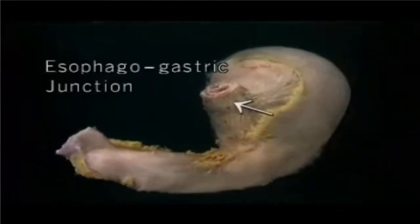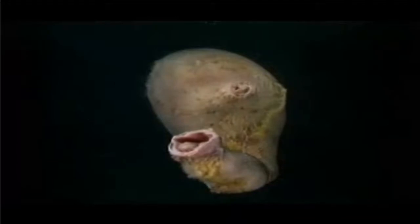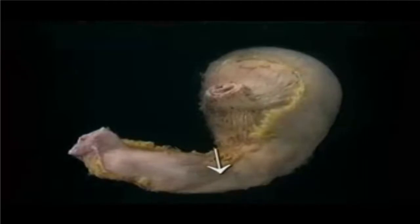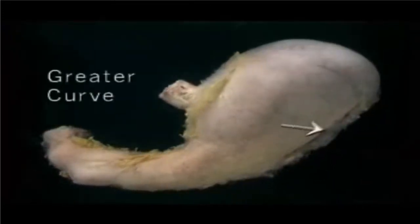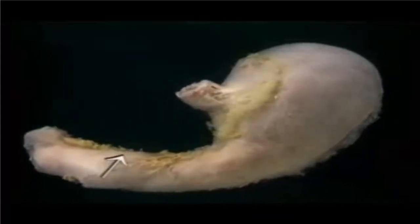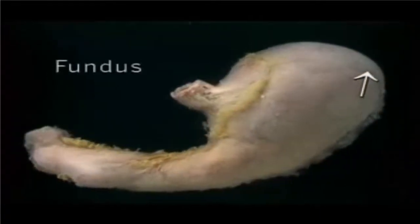Here's the way in — the esophagogastric junction. Here's the way out — the pylorus, which leads to the first part of the small intestine, the duodenum. The narrow part of the stomach leading to the pylorus is the pyloric antrum; in this specimen it's unusually narrow. This broad curve facing to the left is the greater curve. This much tighter curve facing to the right is the lesser curve. This upward and backward bulge is the fundus of the stomach — it sits right below the diaphragm.